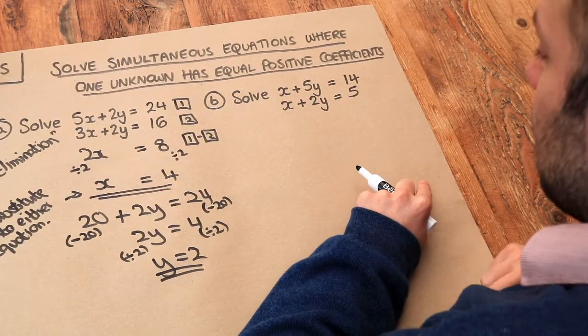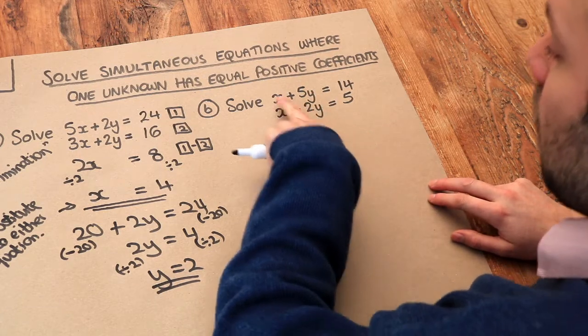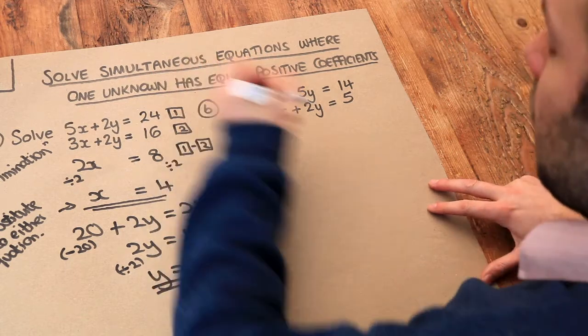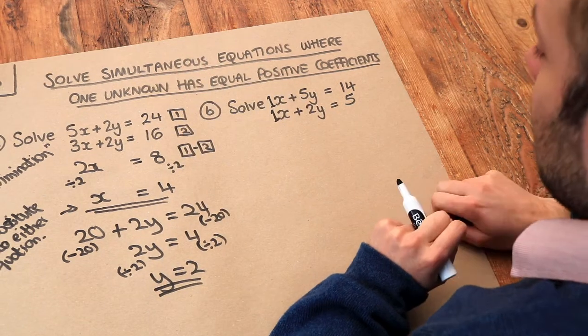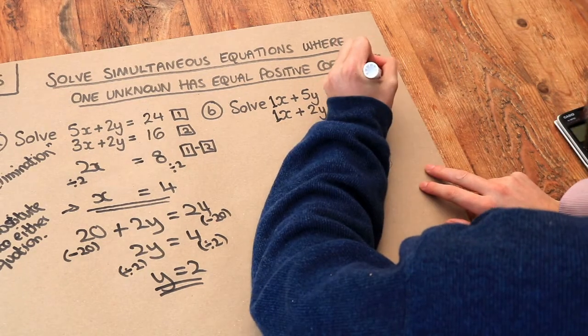Let's do it for the second equation here. Now can we see that these y terms are different but the number in front of these x's which is effectively 1 is the same. And again if we subtract these two equations, these x's are going to cancel this time rather than the y's.